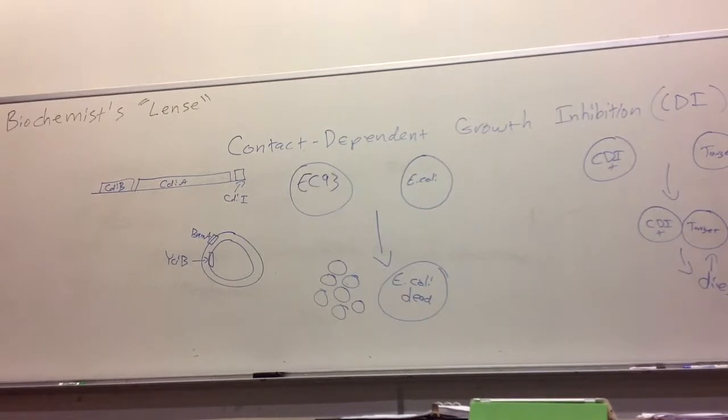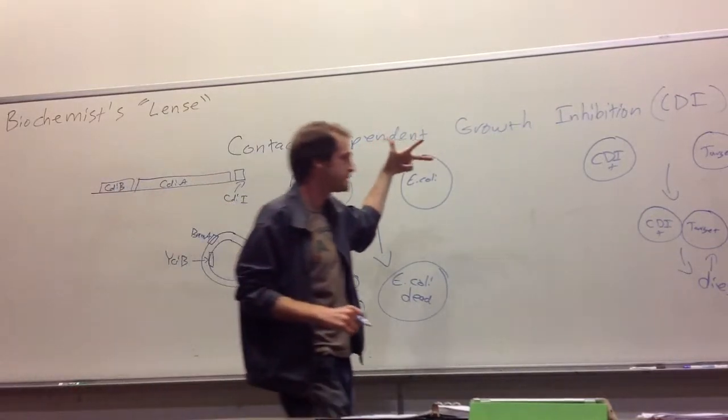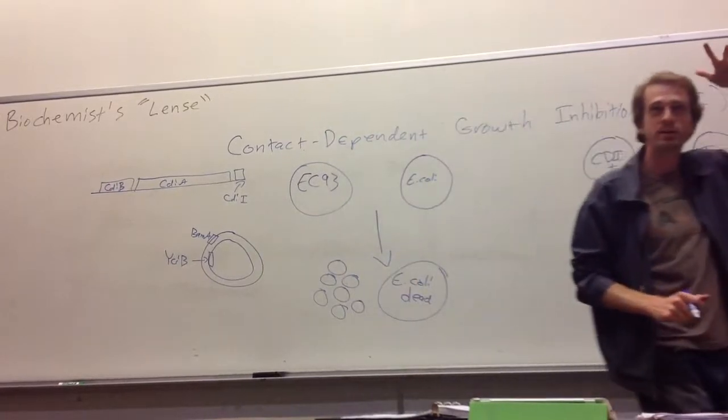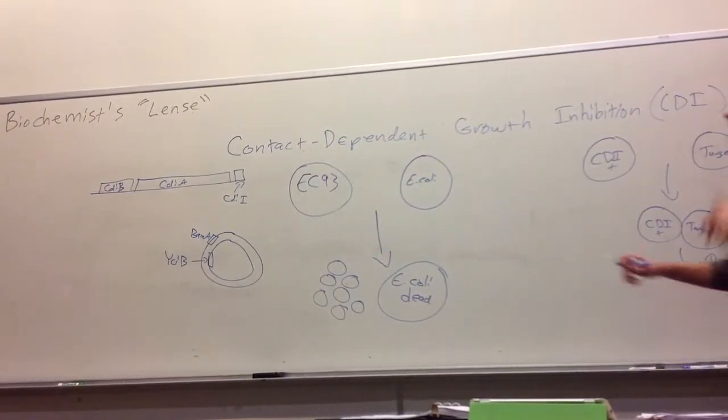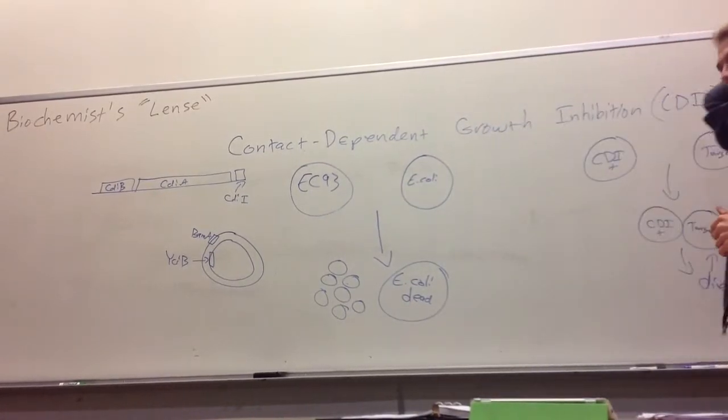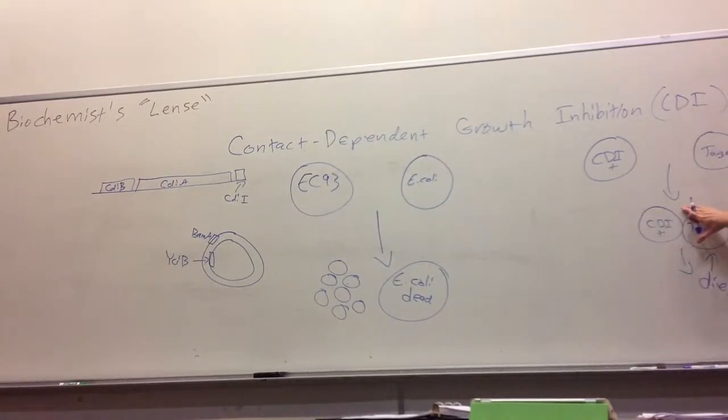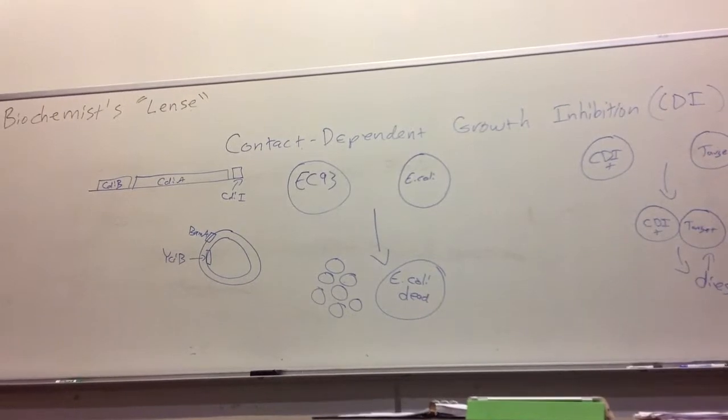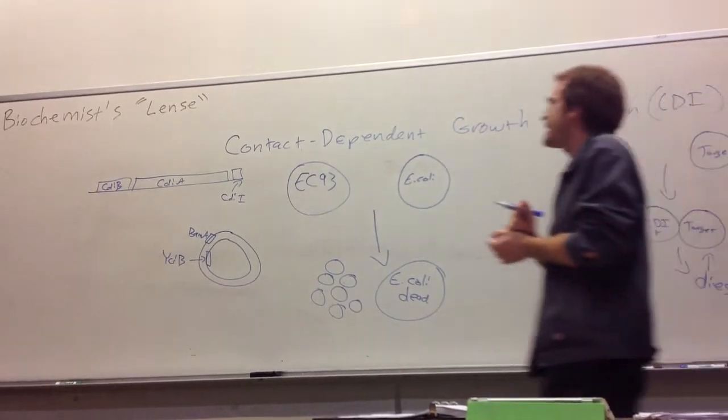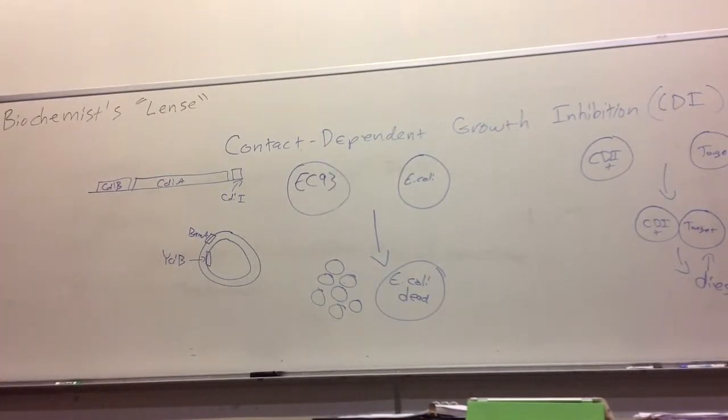So now we have our biochemist lens on, and now we're asking questions as biochemists. We're concerned about things like energy, physical properties, and interactions. So what questions might we ask through our biochemist lens about how this system works? If we think about interactions, we can see an interaction here. The cells are actually touching. The cells are physically interacting. What's the nature of that interaction? What's holding them together?